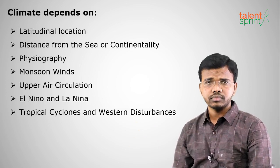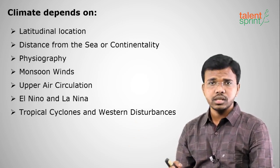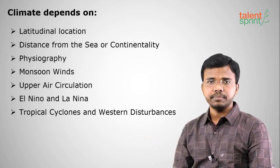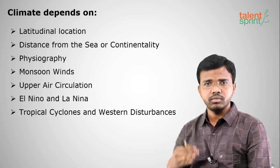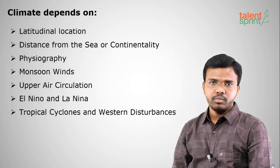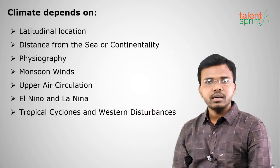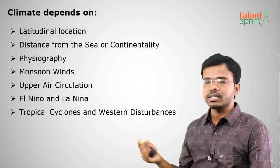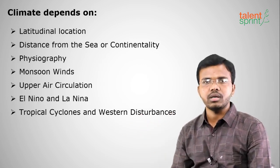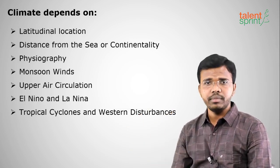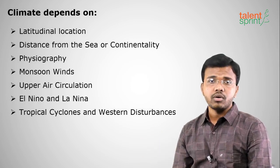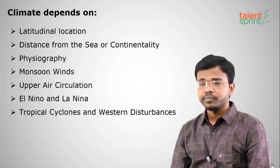The next factors are monsoon winds, which are the main cause of climate differences; upper air circulation — how different winds blow in the upper atmosphere; El Nino and La Nina, which we will discuss later; and tropical cyclones. Near the equator we have cyclones, and they also occur in mid-latitudes, but the effect is more pronounced with tropical cyclones. We also have western disturbances.